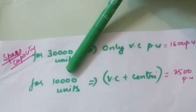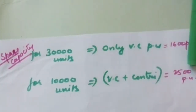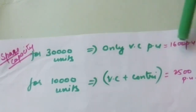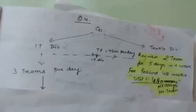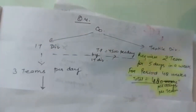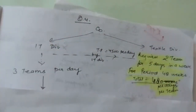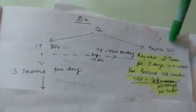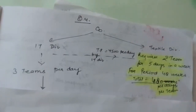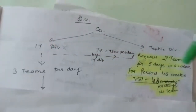Now question number 4. A company has two divisions: IT Division and Textile Division. The IT Division consists of 3 teams per day. The Textile Division has a proposal for a project which needs 2 IT teams for 5 days a week for a period of 48 weeks. So total consulting days required: 48 weeks into 5 days into 2 teams equals 480 consulting days.